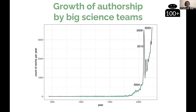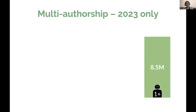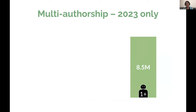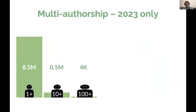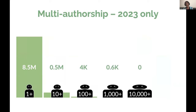Maybe some of you know what's happening there — around 3,000 per year. If we look only at the recent year, 2023, there are 8 million works with one author, half a million with 10 authors, 4,000 with 100 authors and more, and less and less beyond that.